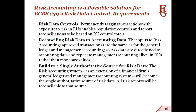Here are some BCBS 239 criteria with an explanation of how risk accounting would handle them. Starting with risk data controls: these can be created by permanently tagging transactions with their exposure to risk in RUs, which enables population controls to be used to reconcile risk reports. Reconciling risk data to accounting data: the source of data for risk accounting is the general ledger and it runs in parallel with management accounting, so risk data is directly tied to accounting data. Build to a single authoritative source for risk data: our proposition is that the risk accounting system, as an extension of the general ledger and management accounting system, will become the single authoritative source of risk data, and all risk reports will be reconcilable to that source.